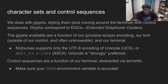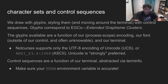Under Unicode, glyphs correspond to extended grapheme clusters and can be considered the atomic unit of visual display. The cursor ought move over them in one motion, and backspace ought destroy an EGC in its entirety. The glyphs available are a function of our encoding, our font, and our terminal. Control sequence availability is purely a function of our terminal, and is almost completely abstracted away by the terminfo library, of which NotCurses makes extensive use.